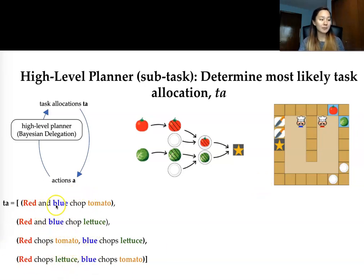Now note the first two where the red and blue agent chop the tomato or chop the lettuce together. This is an example of our cooperation challenge where agents are sharing subtasks.